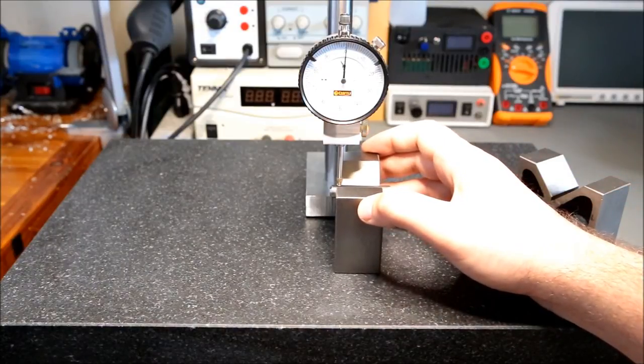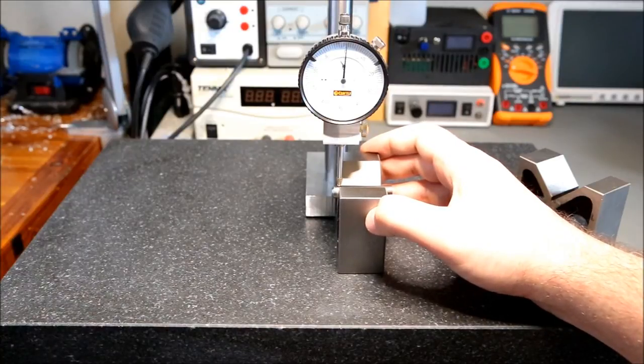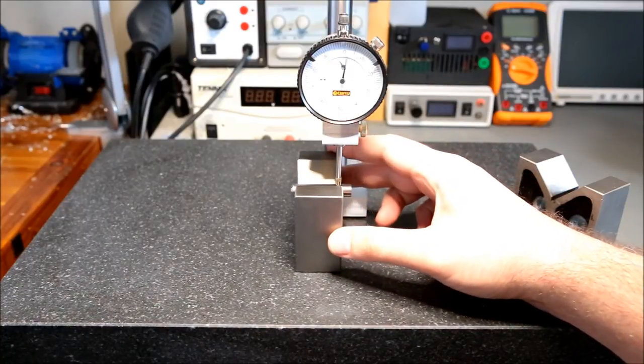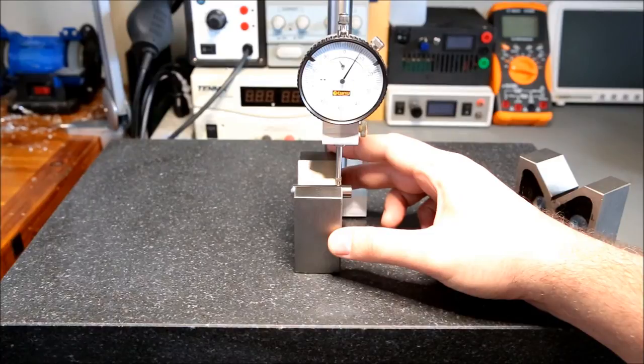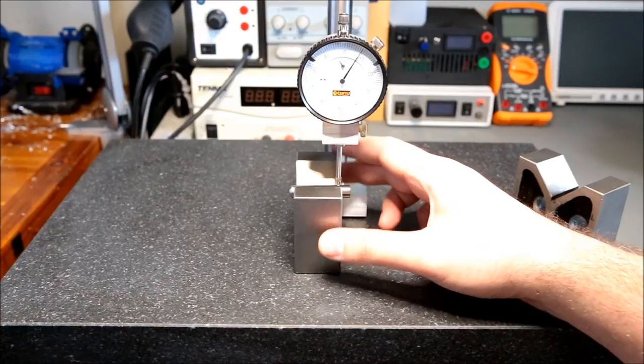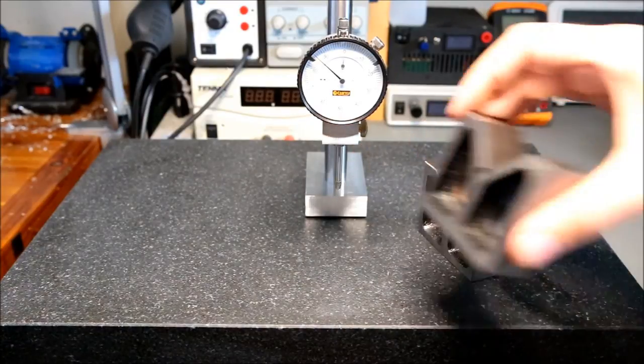So on the left, it's not quite zeroed but reads almost right on zero, and then if we go to the other side it's seven and a half thousandths high on this block and then the other block.